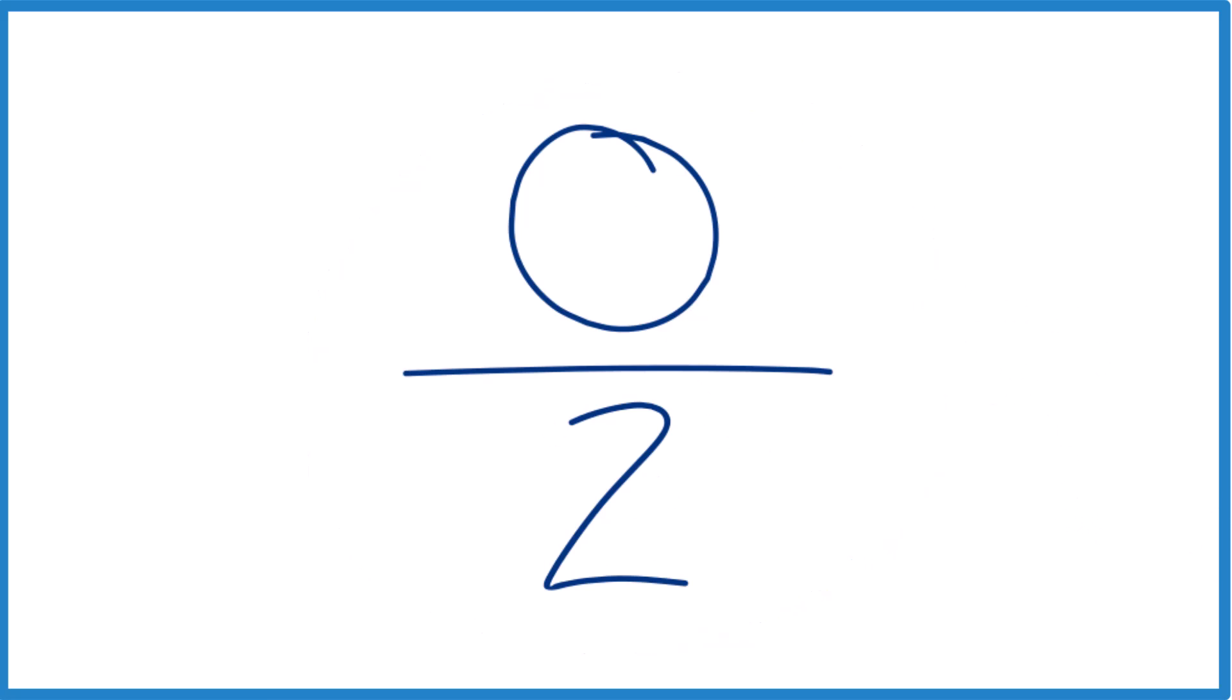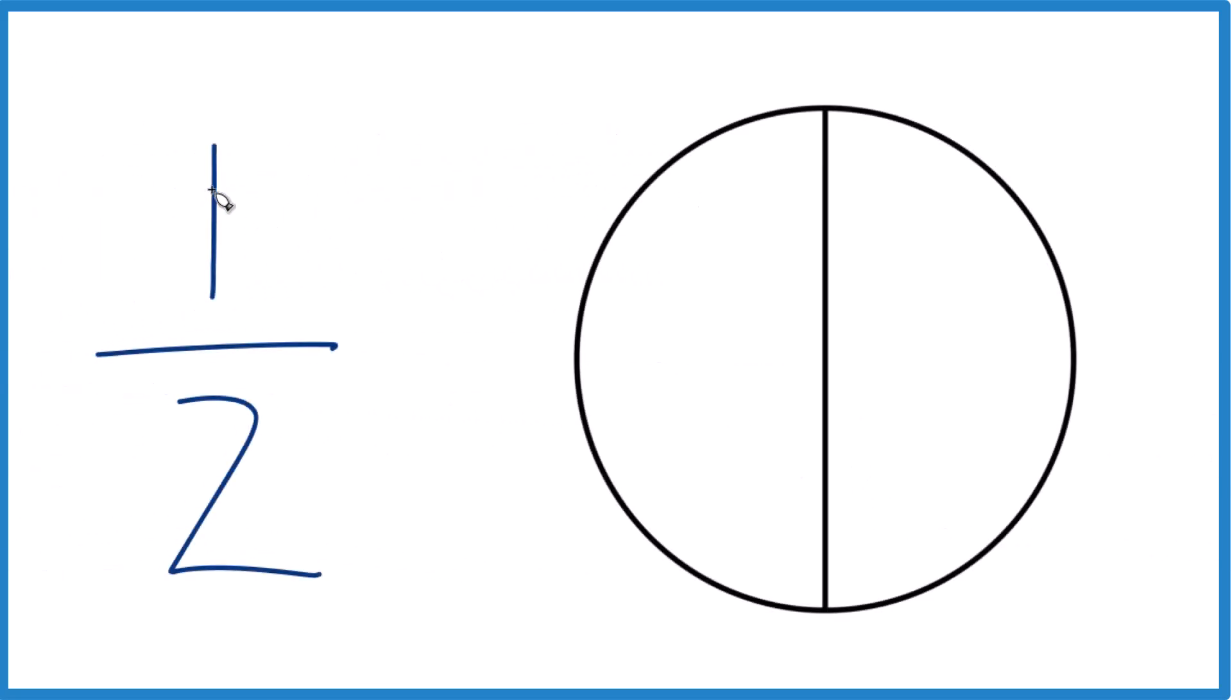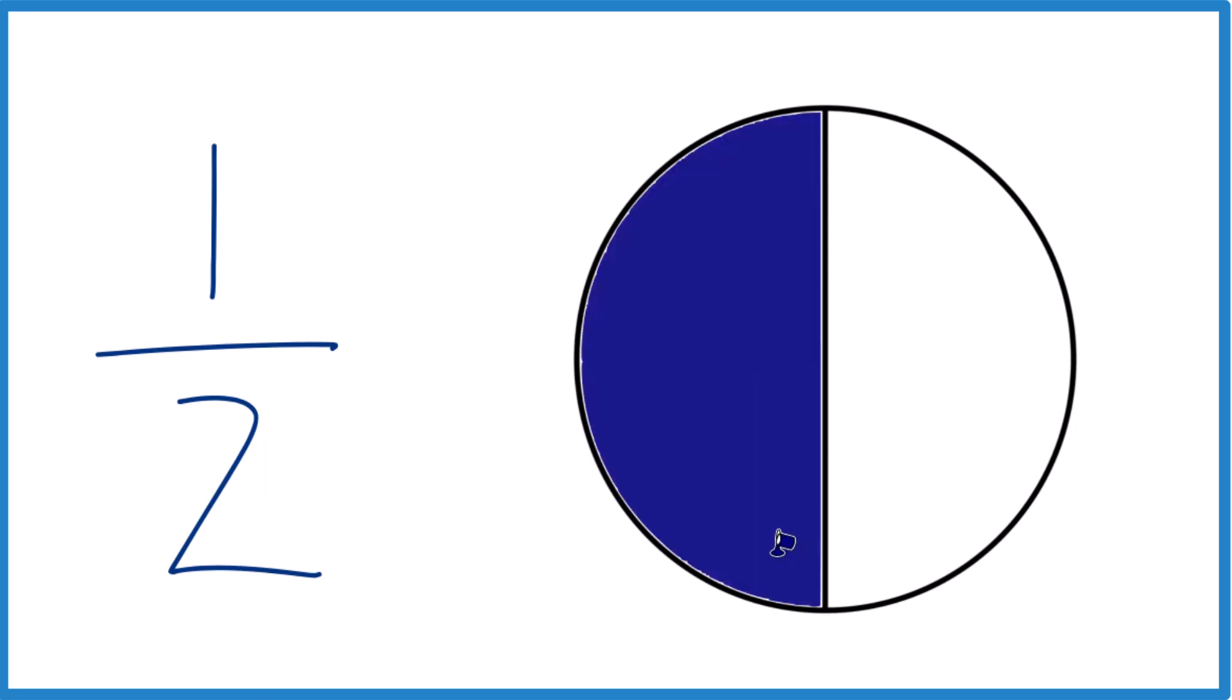Before we do that, let's look at something that's a little bit more familiar. So if we have 1 over 2, that means we have one part, that's the whole circle, we divide it into two pieces. So 1 over 2, this is what it looks like, and then 1 half, that's just one part out of 2.